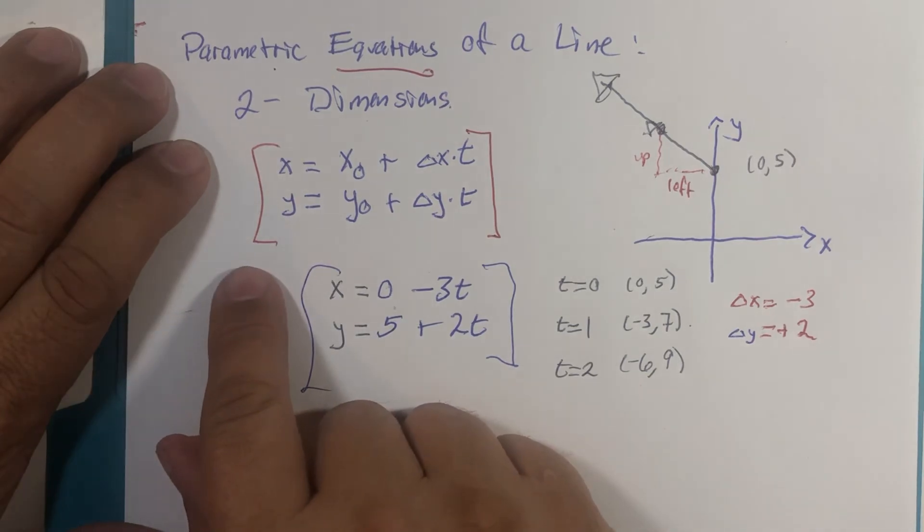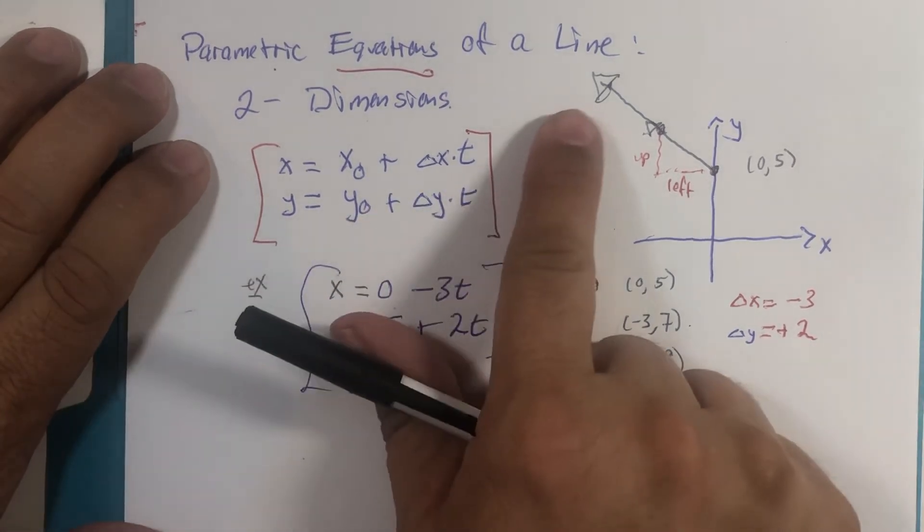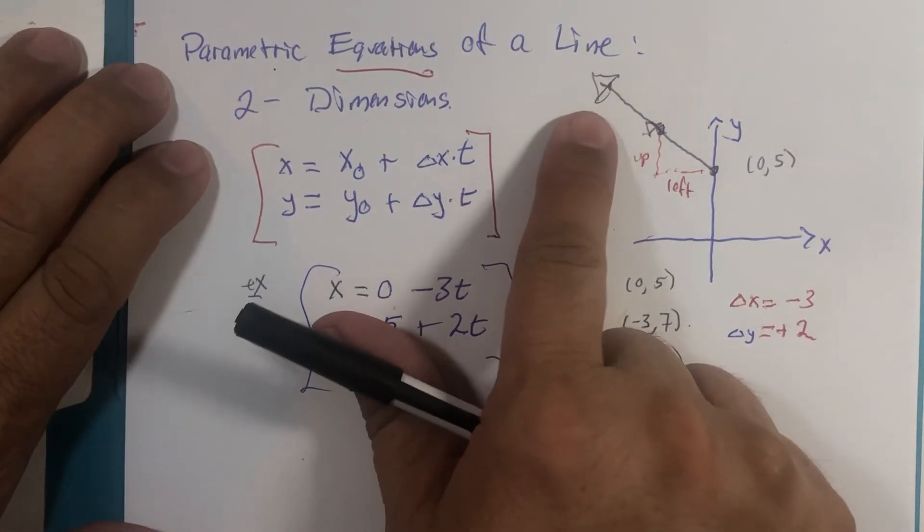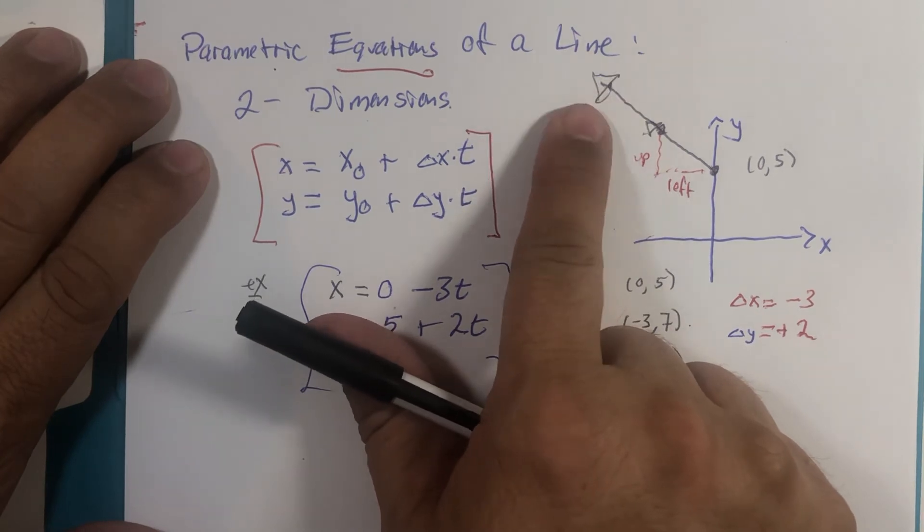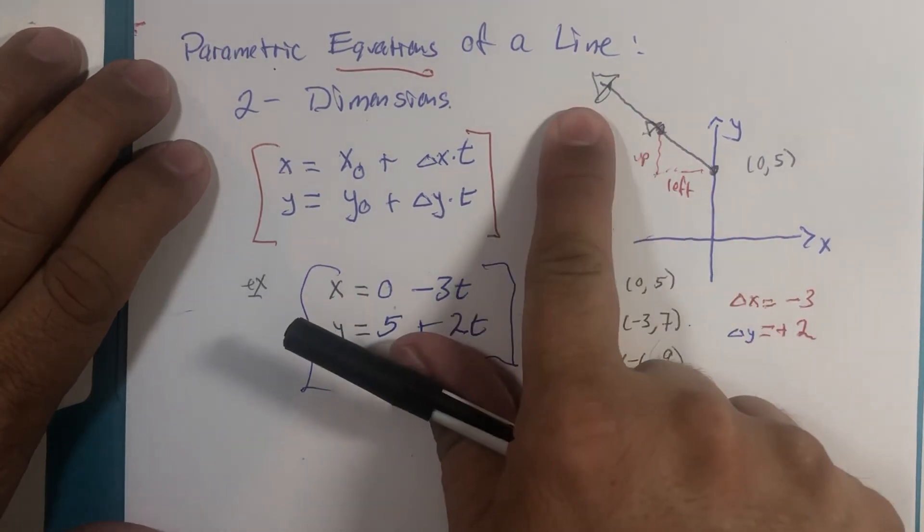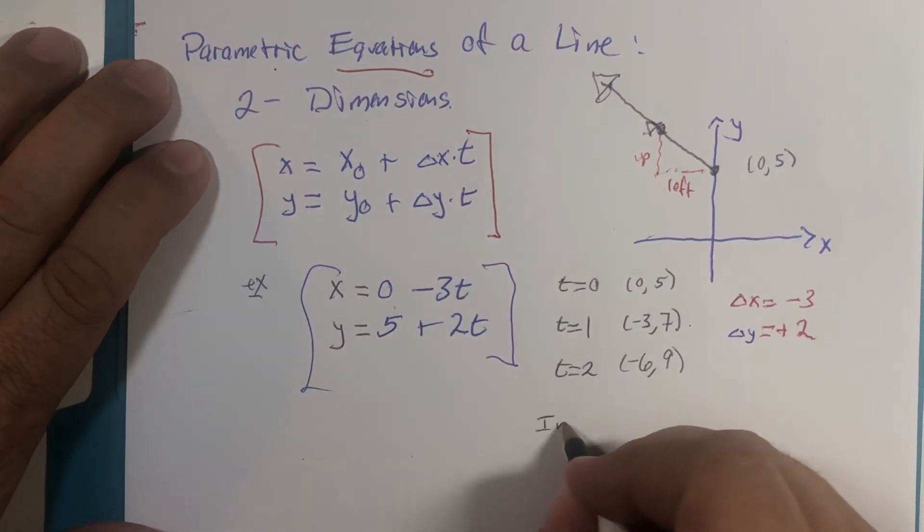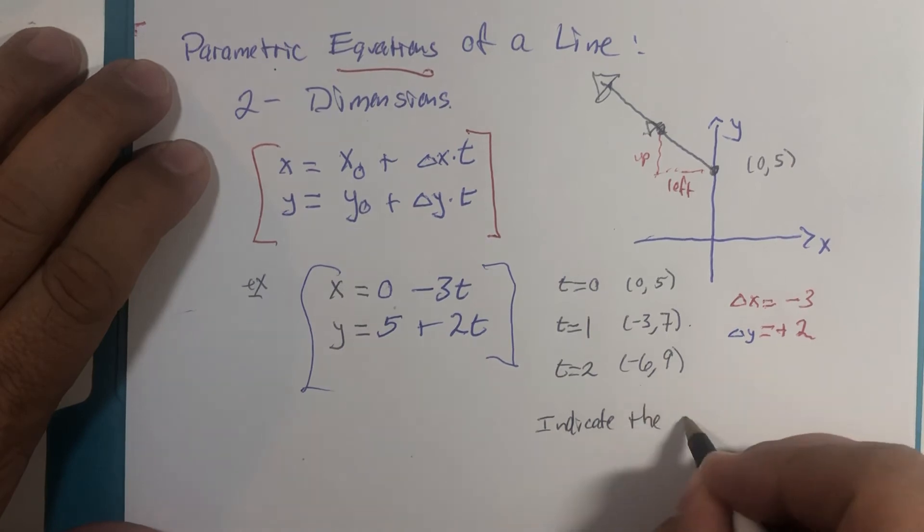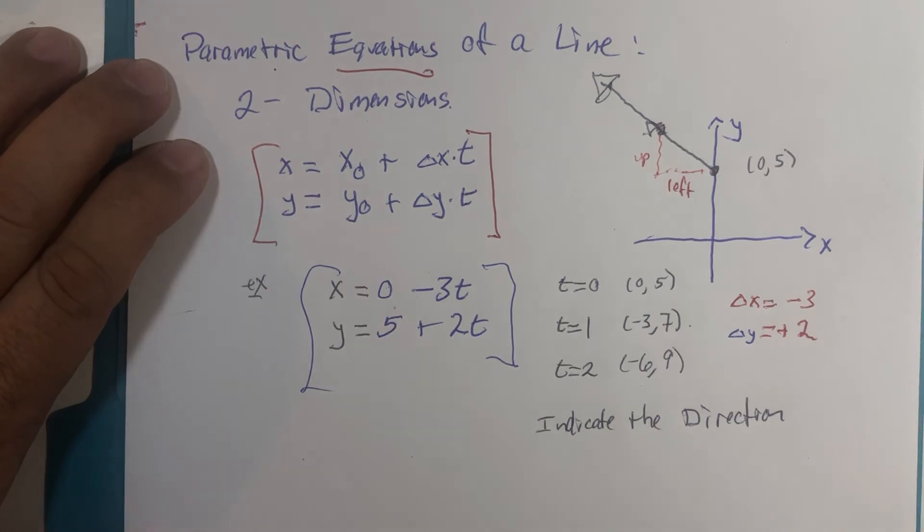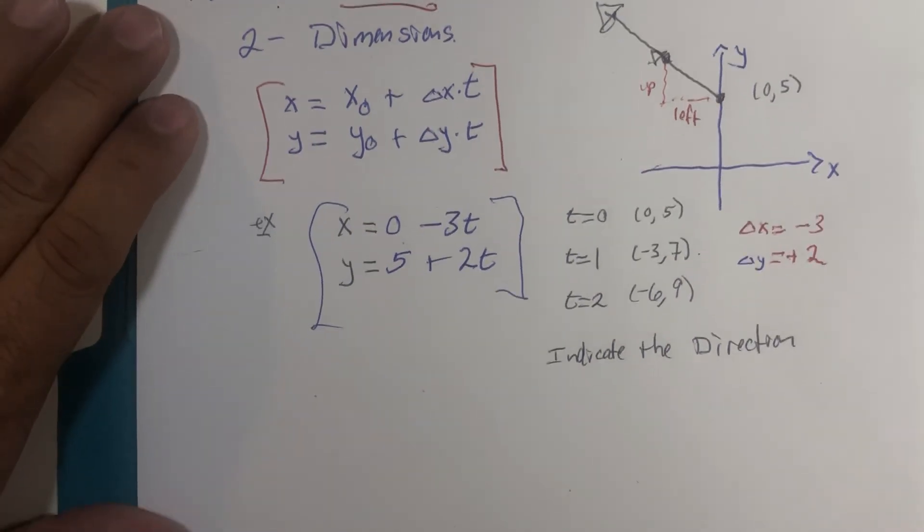We'll get into it more in the next chapter, but the direction is a huge deal of vectors, and I'm clearly going that direction of the line. So indicate the direction. Now let's peek at one more example.